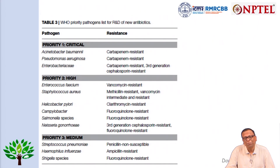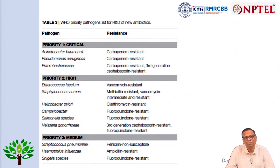Most prioritized conditions are viral infections, but bacterial infections are also on the priority list, particularly due to the emergence of antimicrobial resistance. Priority 1 critical pathogens include Acinetobacter baumannii, Pseudomonas aeruginosa, and Enterobacteriaceae — mostly resistant to carbapenems, with Enterobacteriaceae also resistant to third-generation cephalosporins. High priority includes Enterococcus, Staphylococcus, Helicobacter, Campylobacter, Salmonella species, and Neisseria. Medium priority includes Streptococcus pneumoniae, Haemophilus influenzae, and Shigella species.